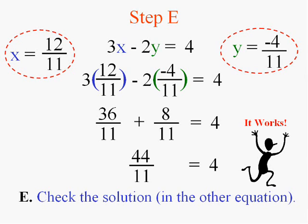So you got quite an advanced solution here. The intersection of these two equations is the point 12/11 and negative 4/11. And it doesn't get any harder than that.